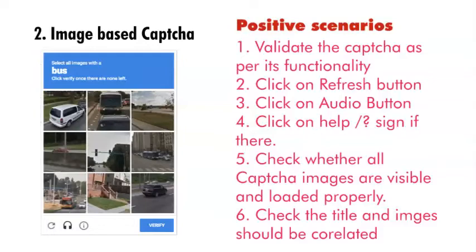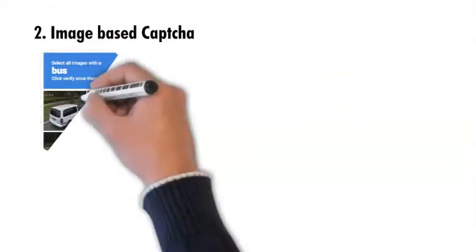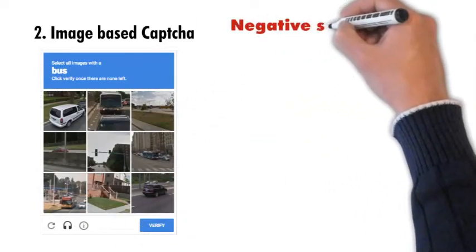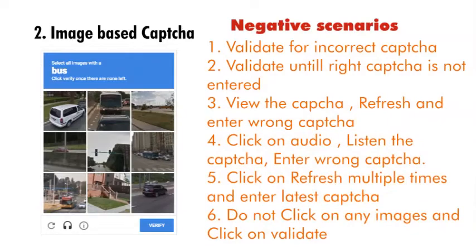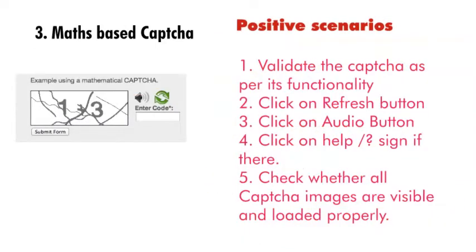Check whether the title and the image are correlated. These are the positive scenarios of image-based CAPTCHA. For negative scenarios: validate for incorrect CAPTCHA — wherever you see a bus, try clicking on some car instead. Click on audio, listen, and enter wrong CAPTCHA. Click on refresh multiple times and enter the latest CAPTCHA. Do not click on any image and click on verify — check whether you get a pop-up message.